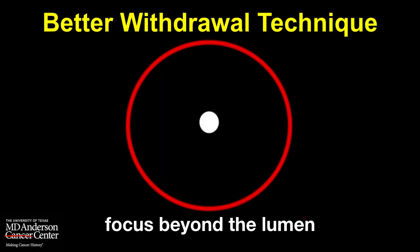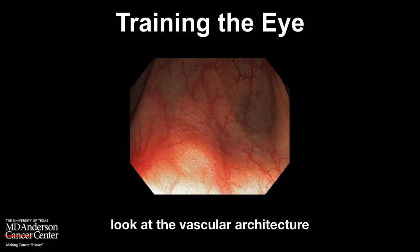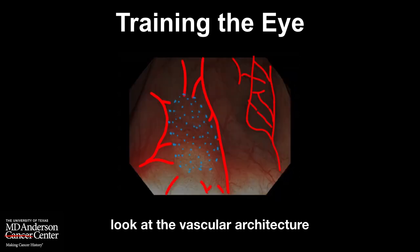What is the best withdrawal technique? You should keep in mind that if you withdraw with focus on the center of the lumen, you are likely to miss flat lesions. Instead, you should focus on the wall rather than the lumen to really detect flat lesions. It's also important to train the eye and look for interruption of vessels and interruption of the innominate grooves to find subtle flat lesions.